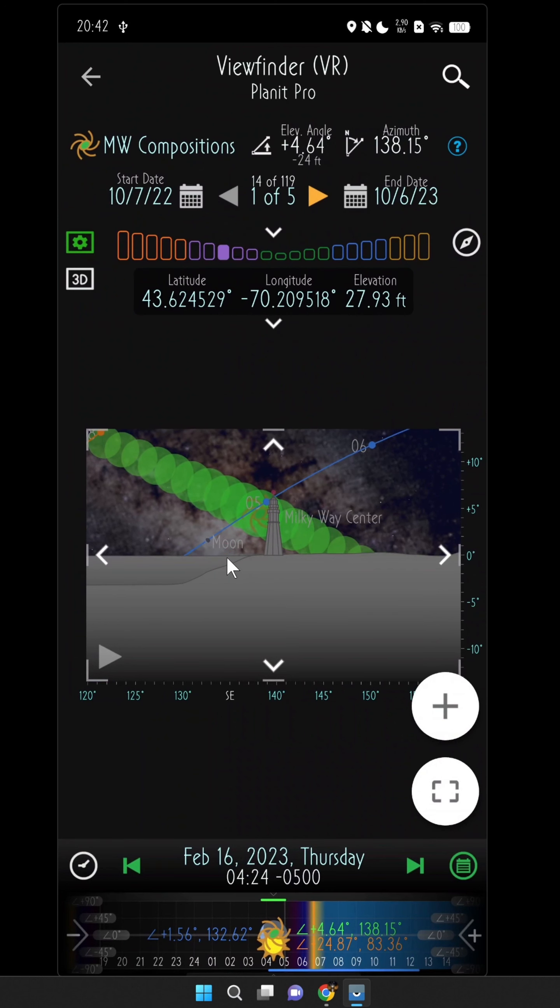If the moon is too high, it'll make the Milky Way hard to see. But when the moon just rises, it's not that bright and it's the perfect time to capture both the moon and the Milky Way.